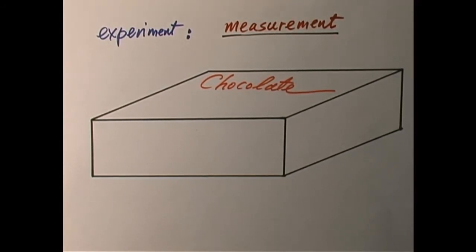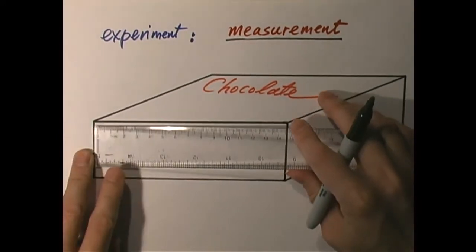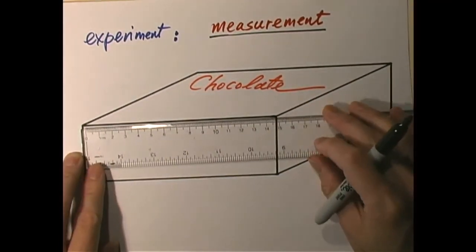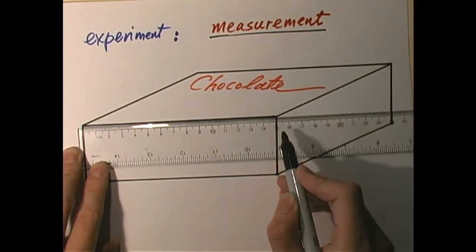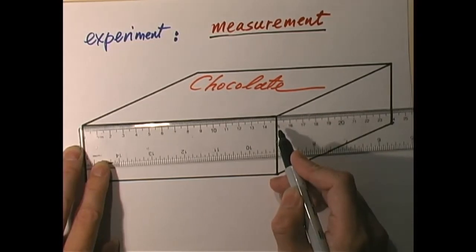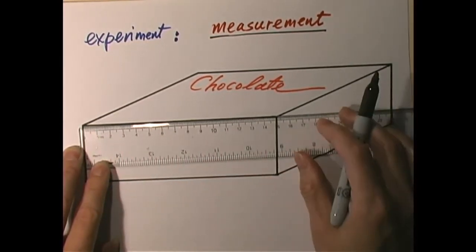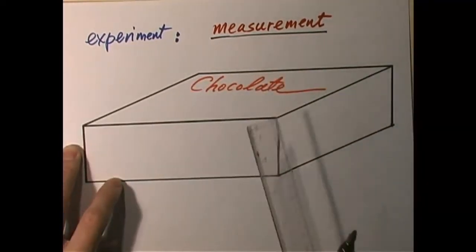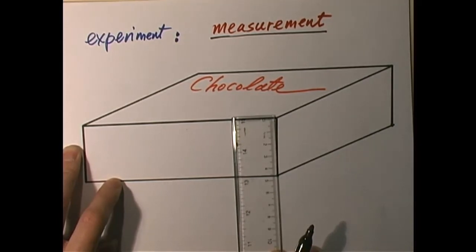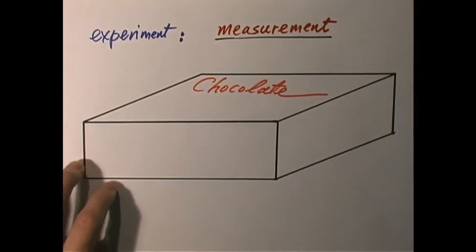That is the thing we do in an experiment. I have here a very simple example. Suppose I have a box of chocolate, and I'm interested in the dimension or the size of this box. How am I going to make a measurement to find the size of this box? We can take a ruler. This is the length — we go from here to there. This is zero and you go all the way to here; you'll find this to be about 15 centimeters. Each of these numbers is centimeters. So the length is 15 centimeters, and the height, if I measure it, is somewhere between 4.5 and 5 centimeters — a little bit less than 5 centimeters. So this is a simple example of doing a measurement.